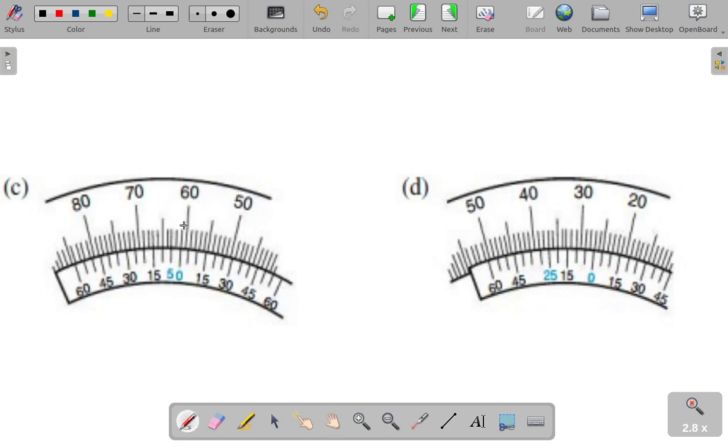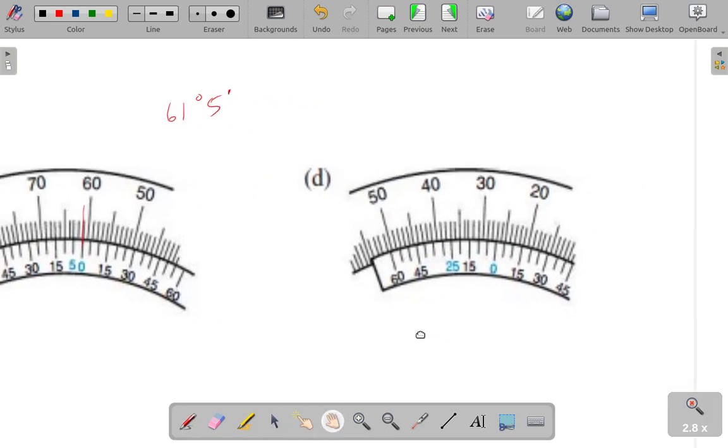On this one, looking at where the zero is, it looks like it's almost exactly lined up with the 61, but it's just slightly past, so I'll call that 61 degrees and 5 minutes, because the 5 follows it. That's also how I knew that it was slightly past, I looked and saw that it was 5 minutes.